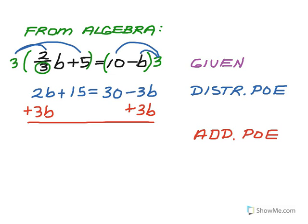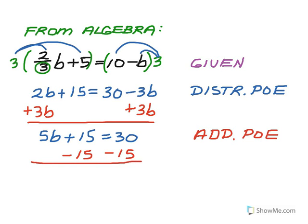So now I have 5b plus 15 equals 30. Well now maybe I want to get the numbers all on one side. I've got b on the left and I want to get all my constants, my numbers on the other side. So I'm going to subtract 15 from both sides. And when I do that, which property of equality from algebra am I using? Well, I'm using the subtraction property of equality, which says as long as I subtract the same thing from both sides of an equation, that the equation will remain true.